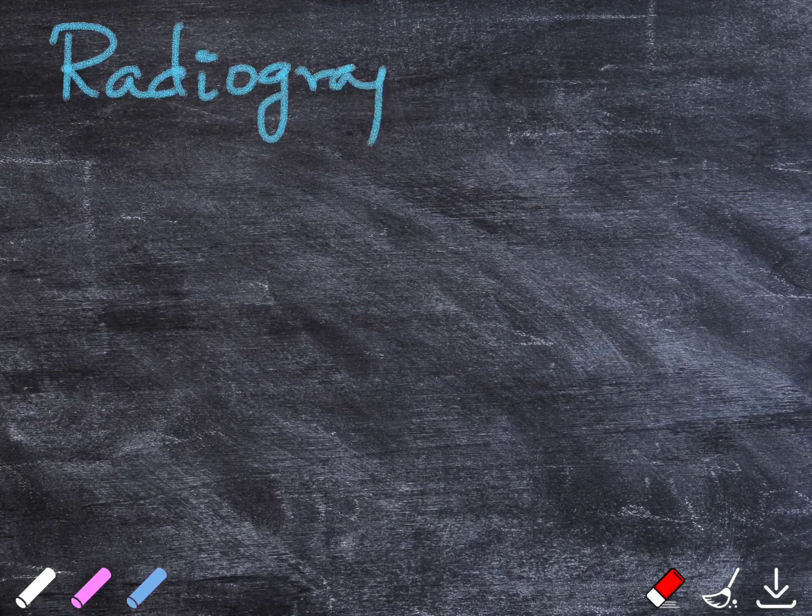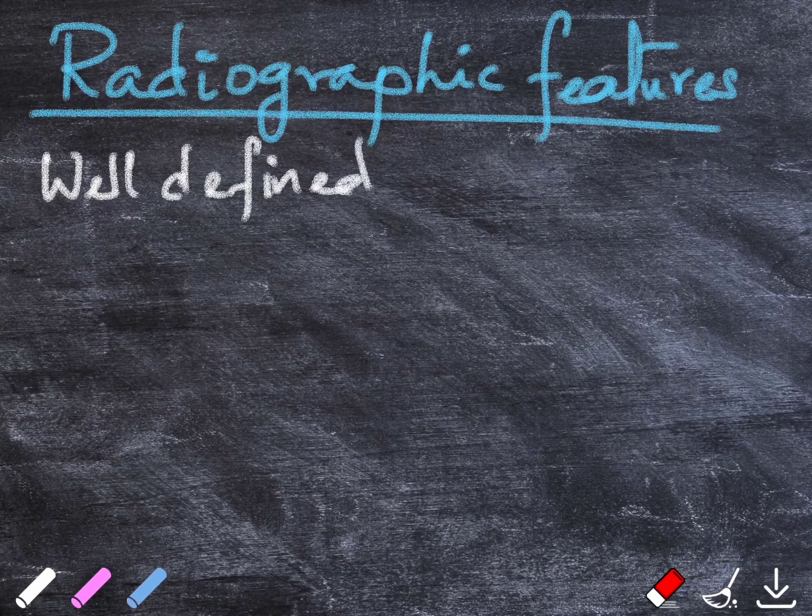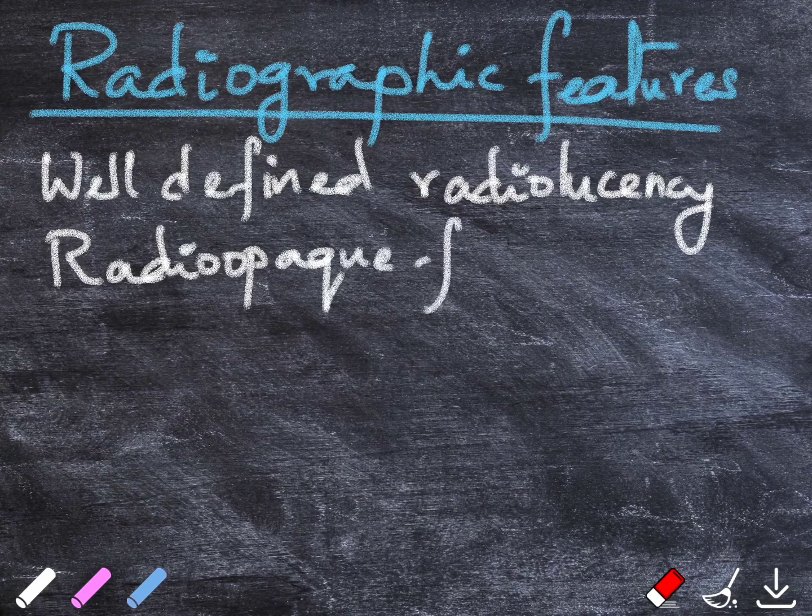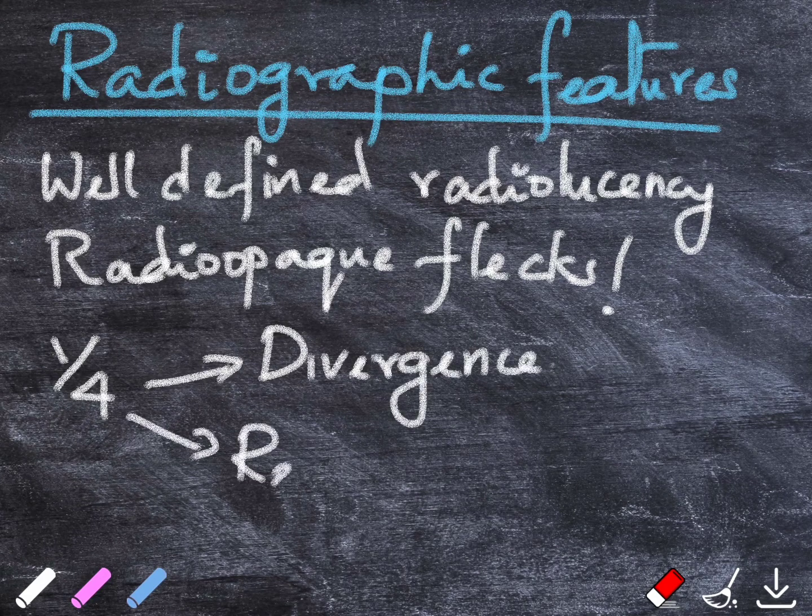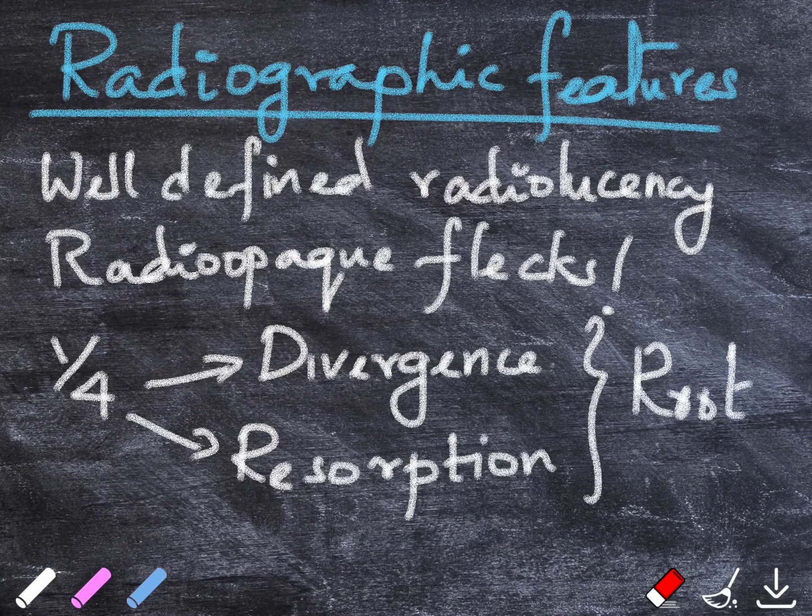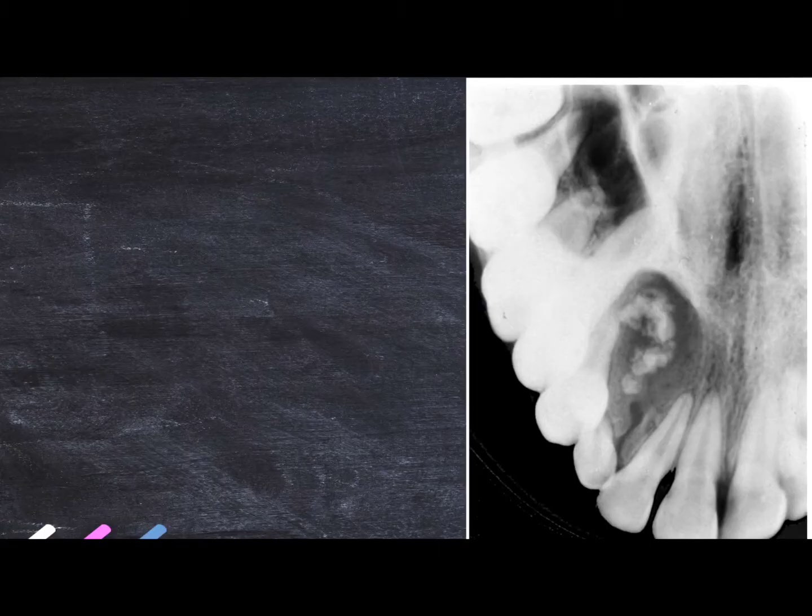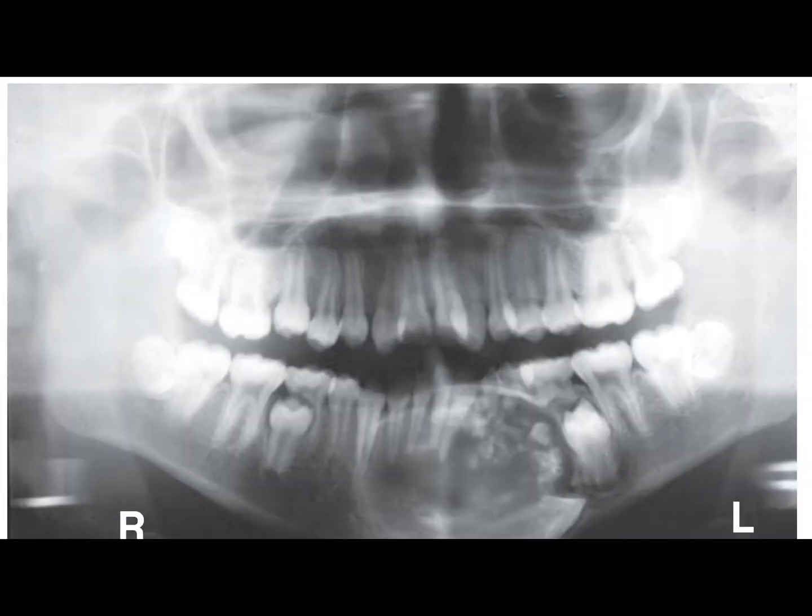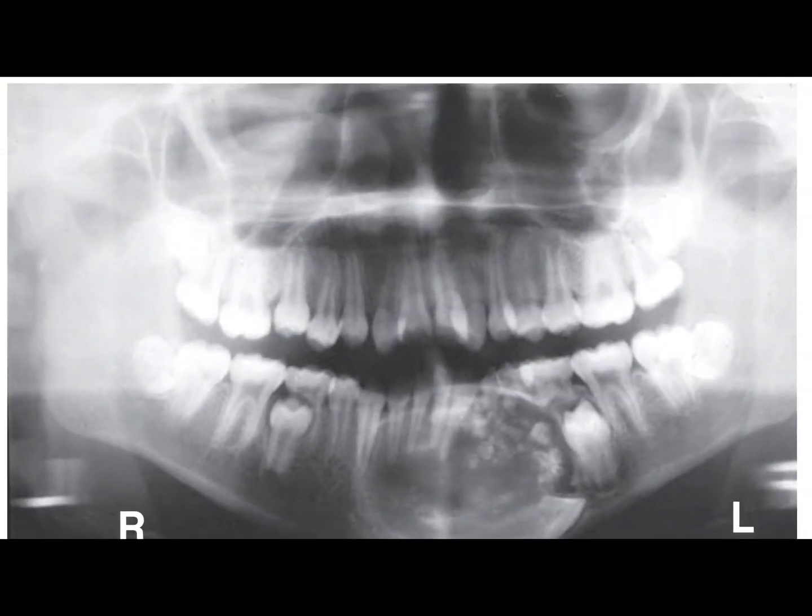Moving on to the radiographic features of COC. This lesion will present as a well-defined radiolucent lesion which will show dispersed radiopaque flecks of varying density depending upon the rate of calcification. One-third of the cases show divergence or resorption of the root of the tooth that are involved. This lesion can be either a unilocular or a multilocular radiolucency. In this picture, you can see a well-defined radiolucent lesion with radiopaque flecks dispersed within. In this OPG, if you look closely, you can see a large expansile lesion showing some degree of radiopaque material within it.